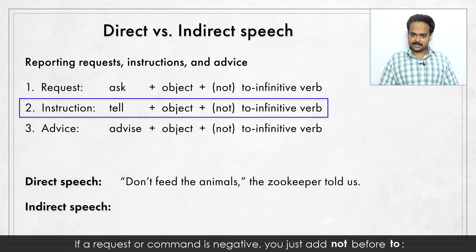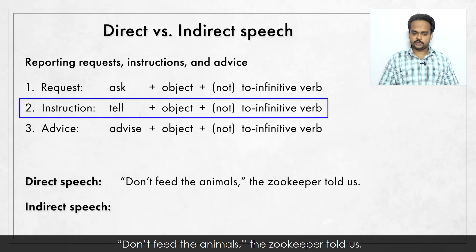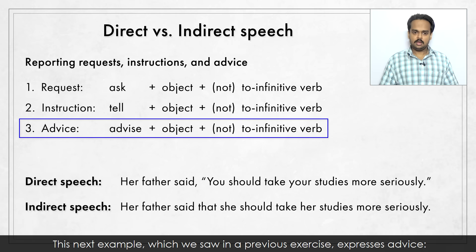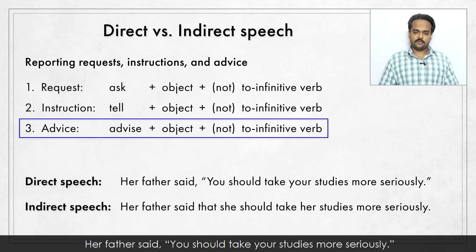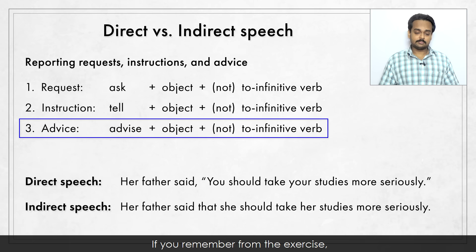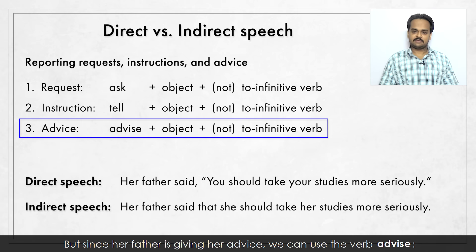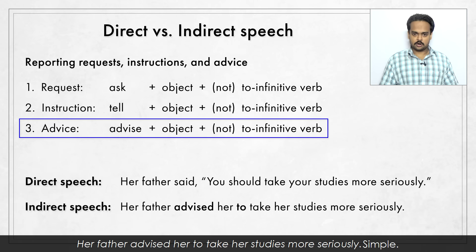"Don't feed the animals," the zookeeper told us. We change this to indirect speech like this: the zookeeper told us not to feed the animals. This next example, which we saw in a previous exercise, expresses advice. Her father said, "You should take your studies more seriously." We can convert this to indirect speech as: her father said that she should take her studies more seriously. But since her father is giving her advice, we can use the verb "advise": her father advised her to take her studies more seriously.